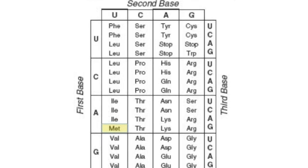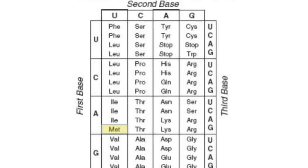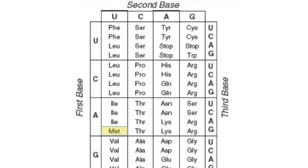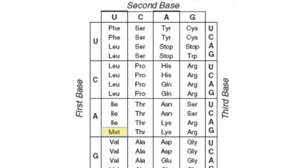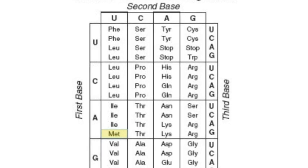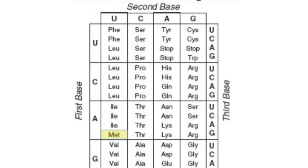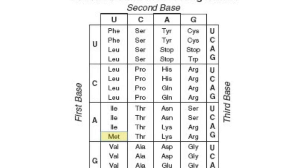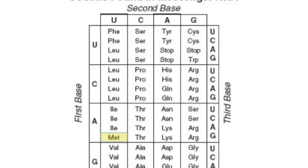And in this case AUG would code for the amino acid methionine. Continue down the sequence to decode the messenger RNA and translate it.